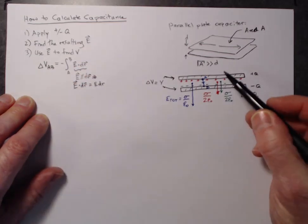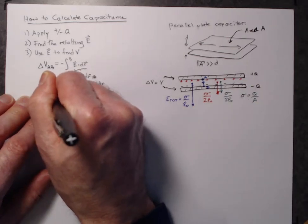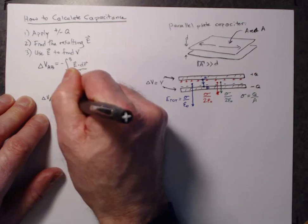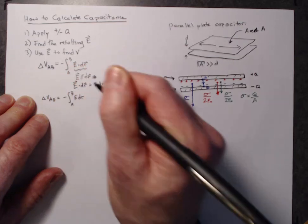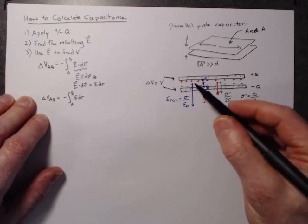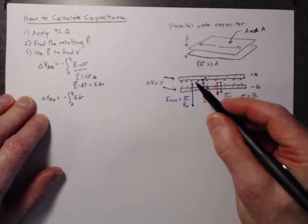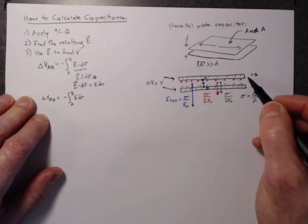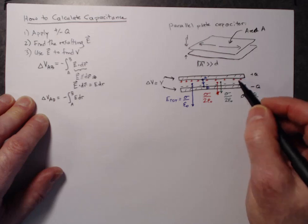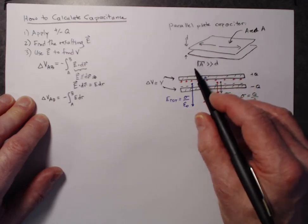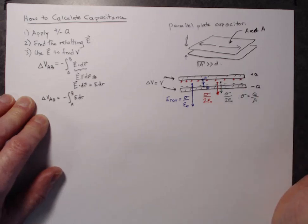Then in this case, so then delta VAB is minus the integral from A to B of E times dr. And in this particular case, we have the electric field is constant over this whole distance as long as we're not too close to the edges. At the edges, the electric field might not be uniform, but because of this condition that we're assuming that they're close together, we approximate them as infinite sheets.